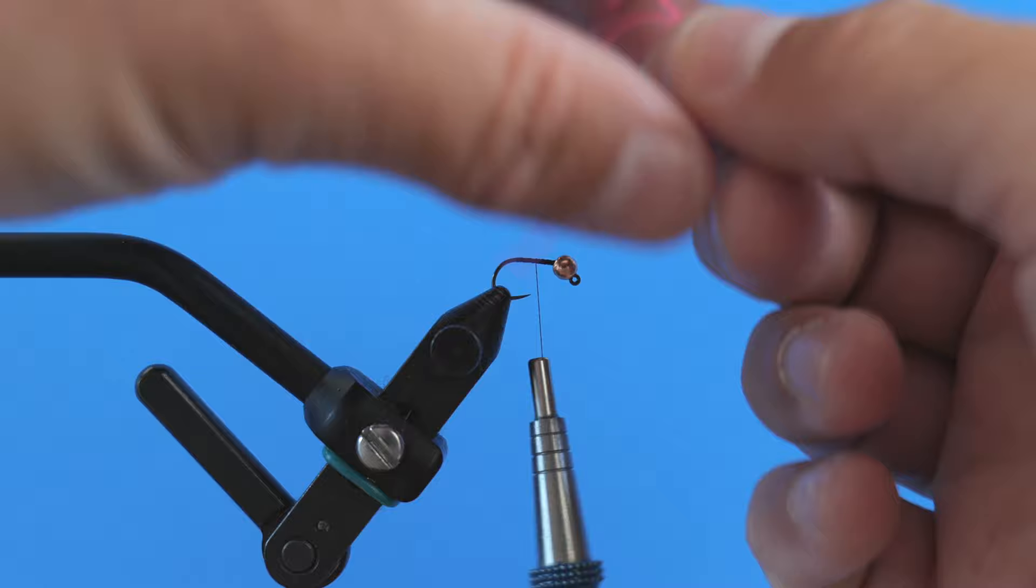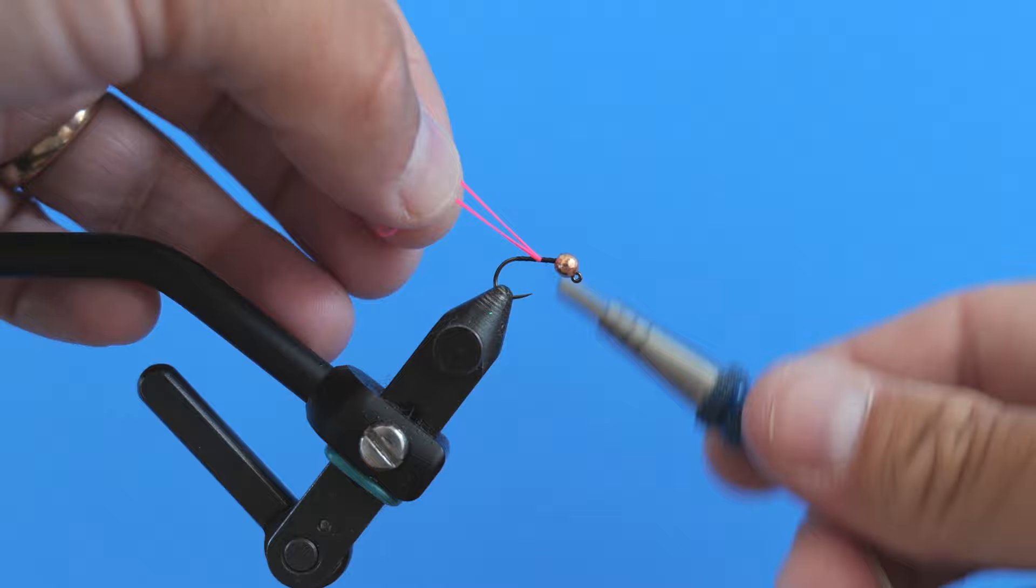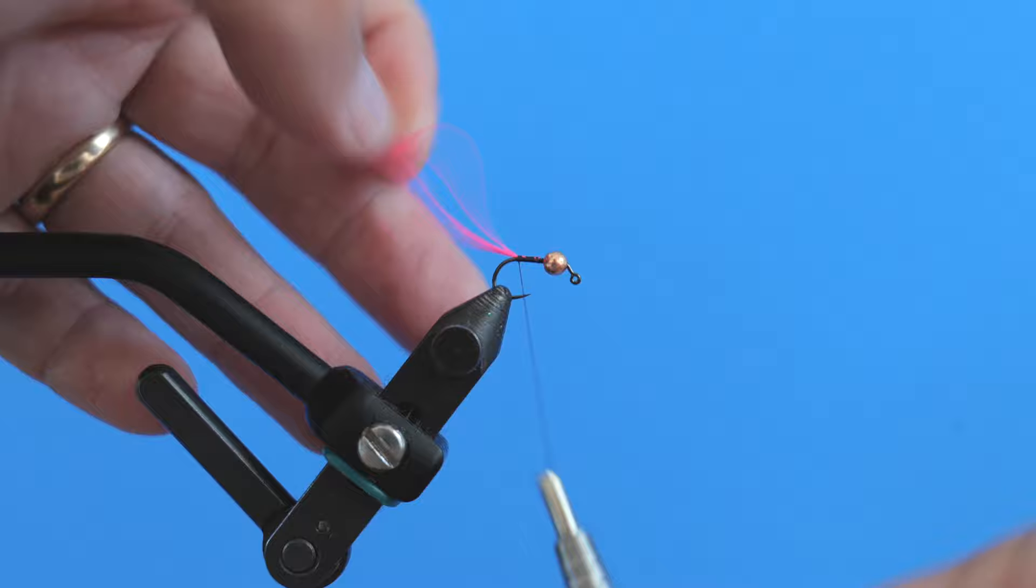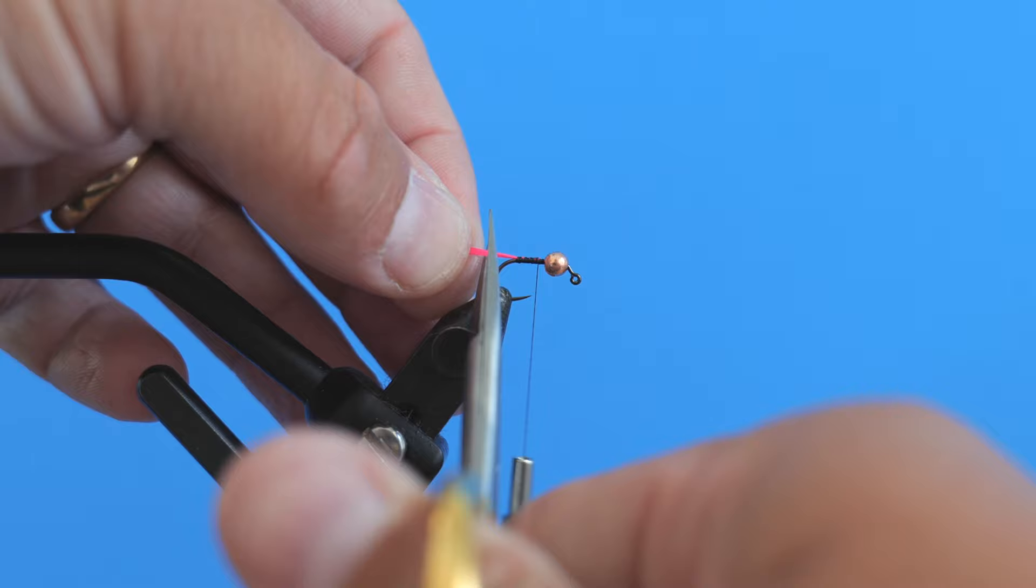So I've got a piece of Glowbrite floss here that I've doubled over. And then I'm going to fold it over again and wrap it around the thread and place it right up on top of the hook just like that. And then kind of touching turns all the way back. I'm going to lock that in place. Advance my thread back a little bit.